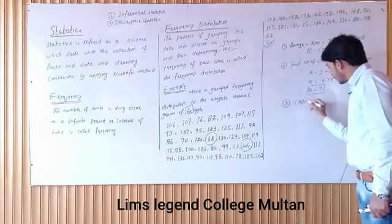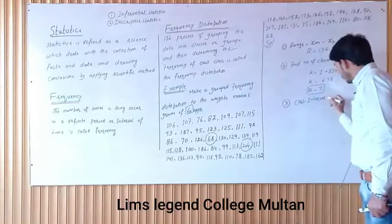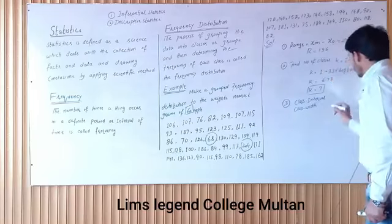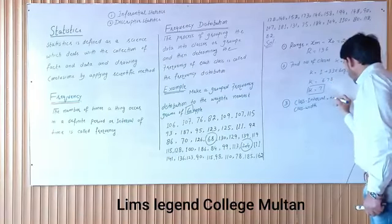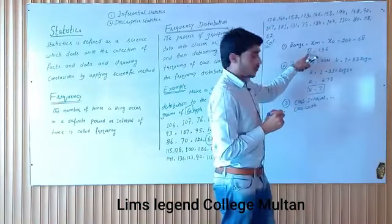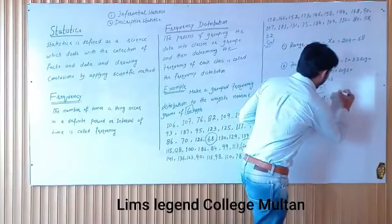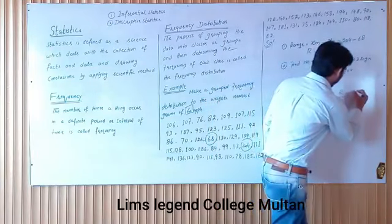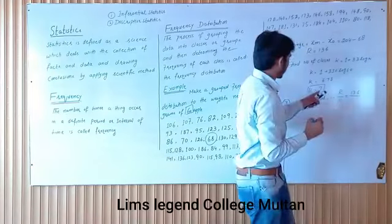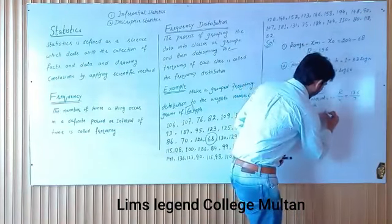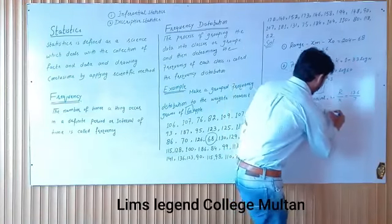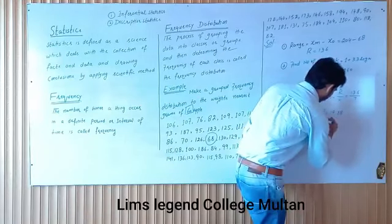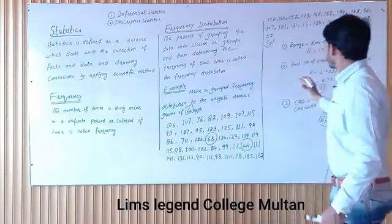Third step: class interval یا class width find کرنا ہوتا ہے، جسے ہم h سے represent کرتے ہیں۔ Class interval = range / number of classes = r / k = 136 / 7 = 19.38، اور round off کرنے کے بعد h = 20.